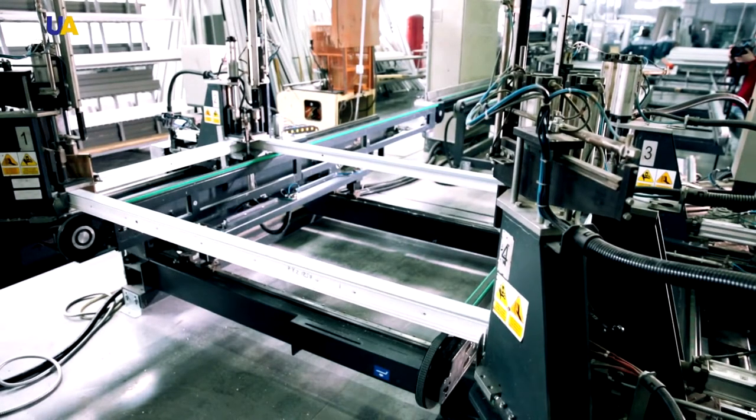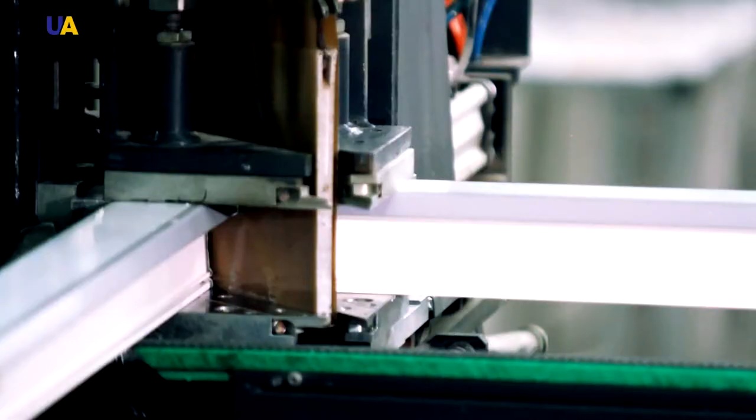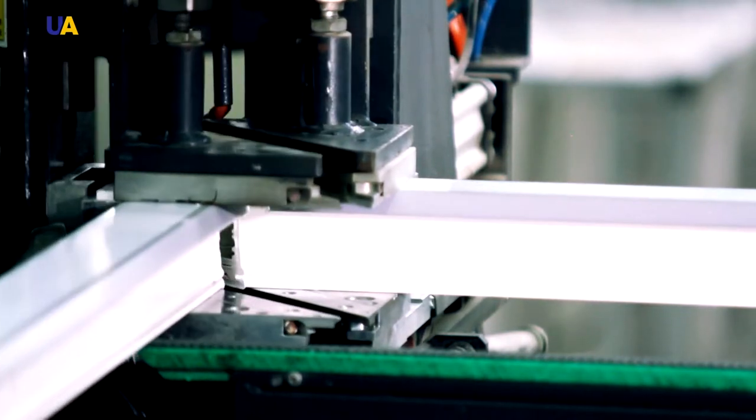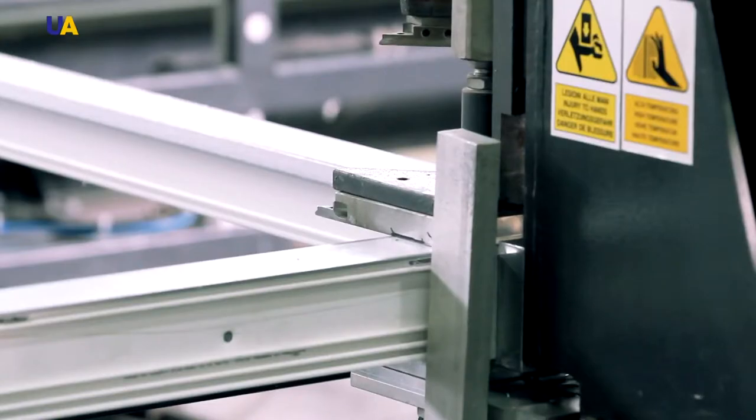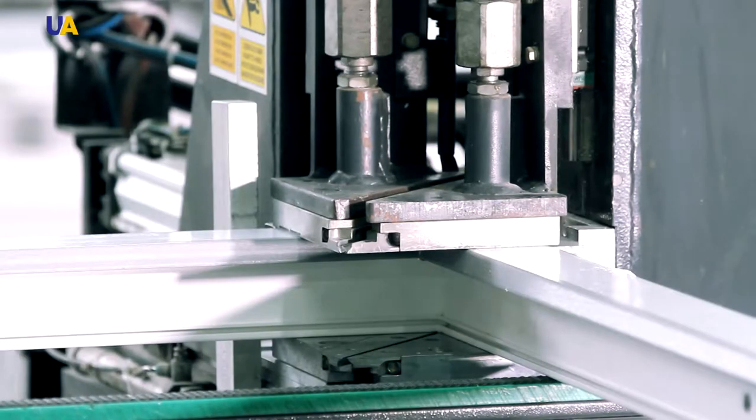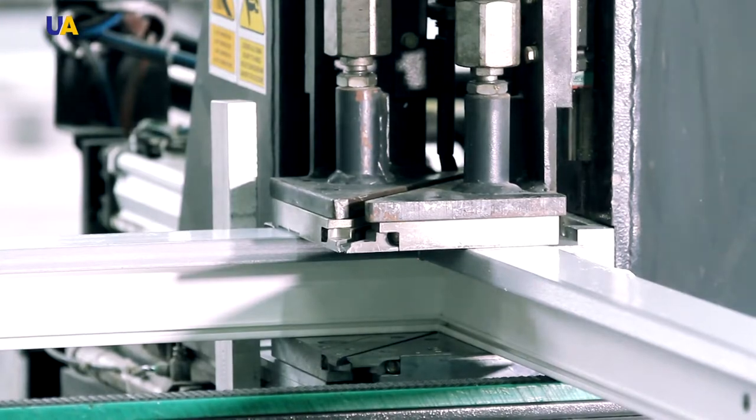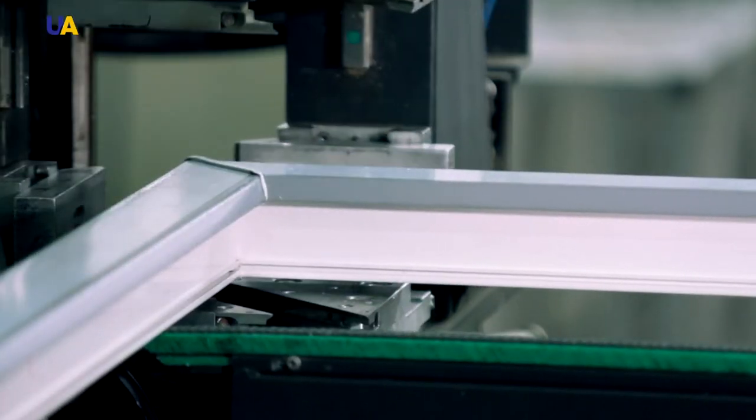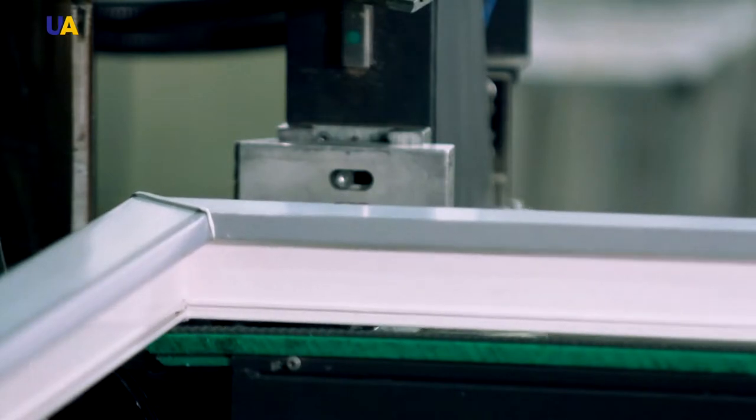After all of the workpieces are ready, it's time to weld. This enterprise uses a high-performance 4-head welding machine which provides ideal geometry with a margin of error of no more than one-tenth of one millimeter. This is important because the technological holes have already been bored.